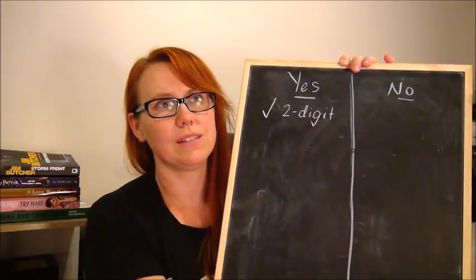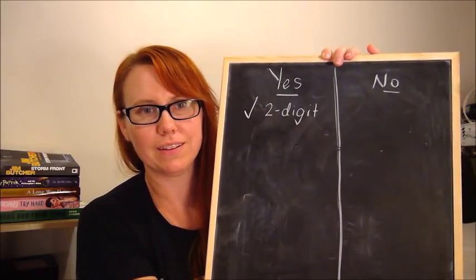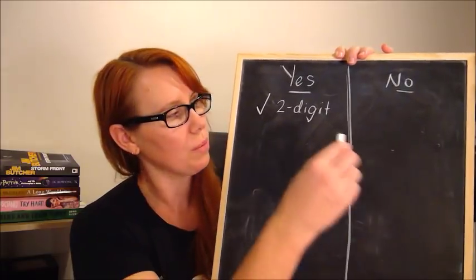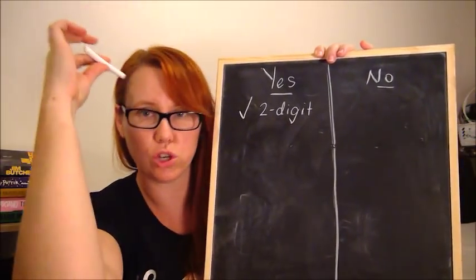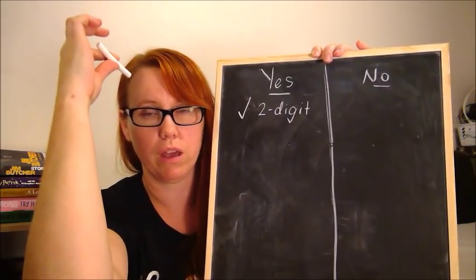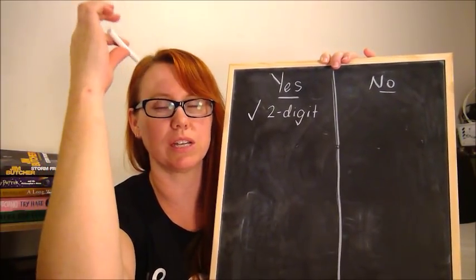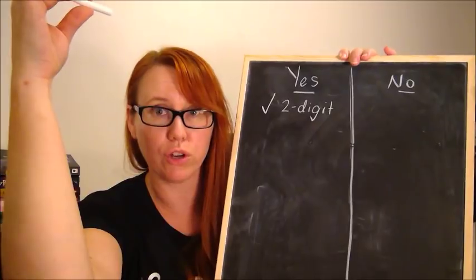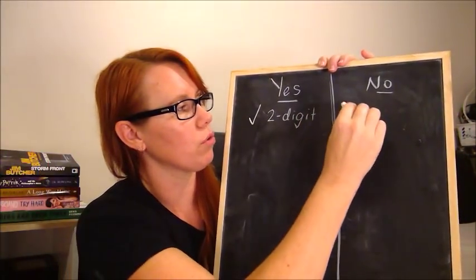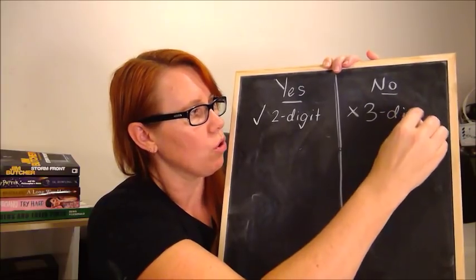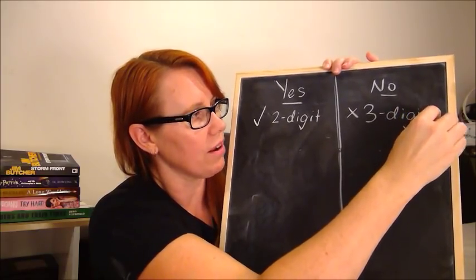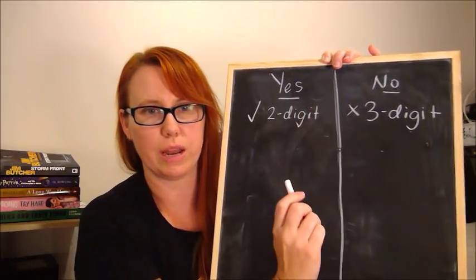And then if some random student says, is it a three-digit number? Chances are the whole class will go, no, because it's a two-digit. However, I'm still going to write it down because for that student in their head, they're still picturing three-digit. They either haven't heard or they can't picture a two-digit. So I'm going to write, no, it can't be a three-digit number because we already established that, yes, it is a two-digit number.